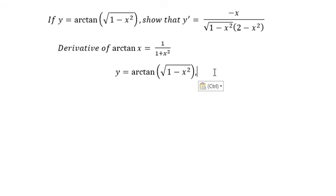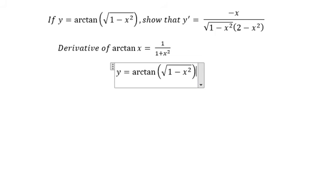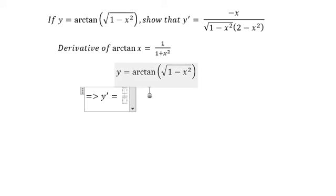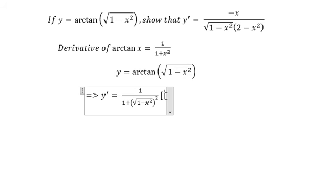We have arctan here, so now we do the first derivative. The first derivative of arctan is 1 over 1 plus, and because inside the arctan we have the square root, the x here we replace with square root 1 minus x squared power 2. Because we still have x, we need to do the first derivative in the next step.